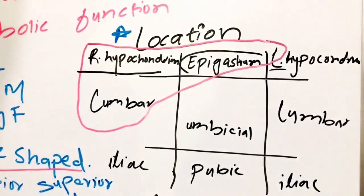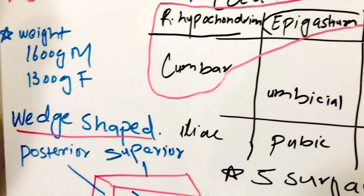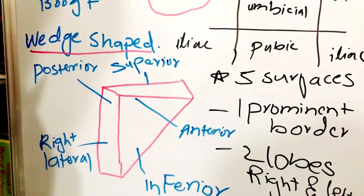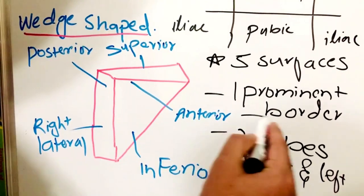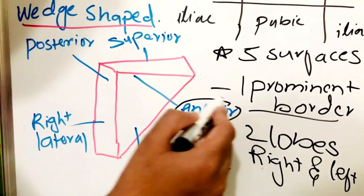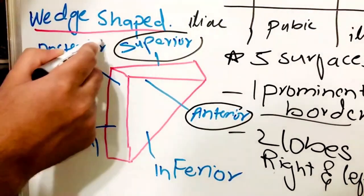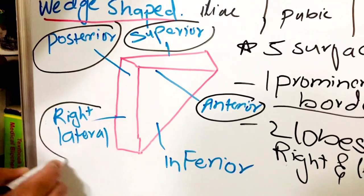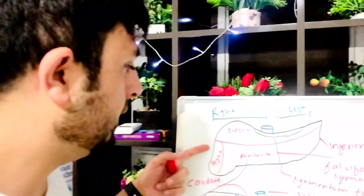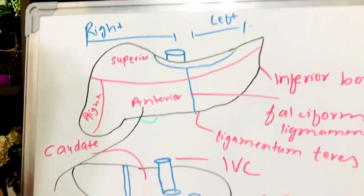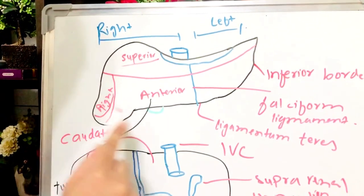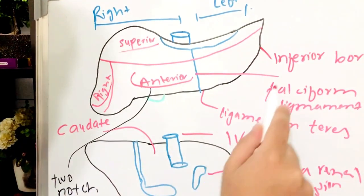And the liver also occupies half of the lumbar region. If we talk about the shape of liver, it is wedge-shaped, as we can see here. The liver has five surfaces and one prominent border. In the five surfaces we have our anterior surface, superior surface, posterior surface, right lateral surface, and inferior surface. This is our anterior view of the liver and this is our posterior view — we can see the superior surface, right surface, anterior surface, and inferior surface.